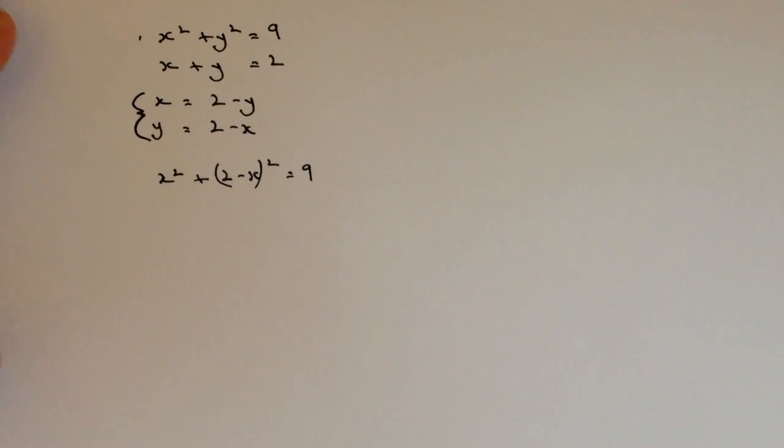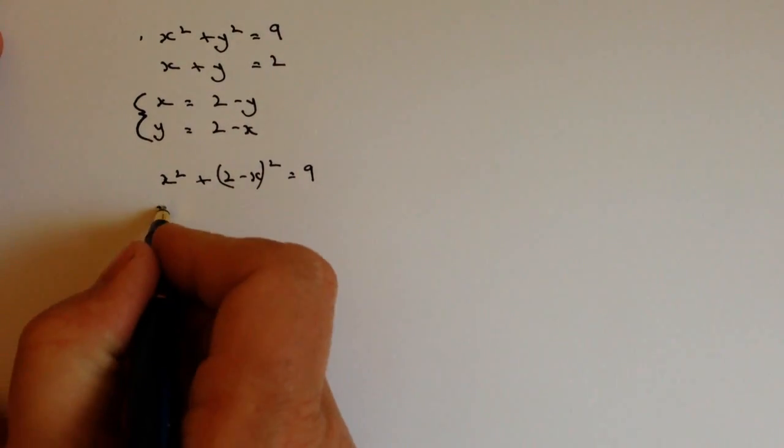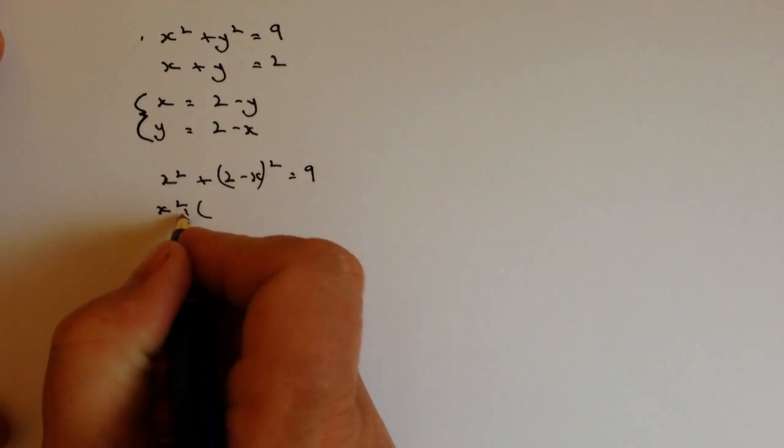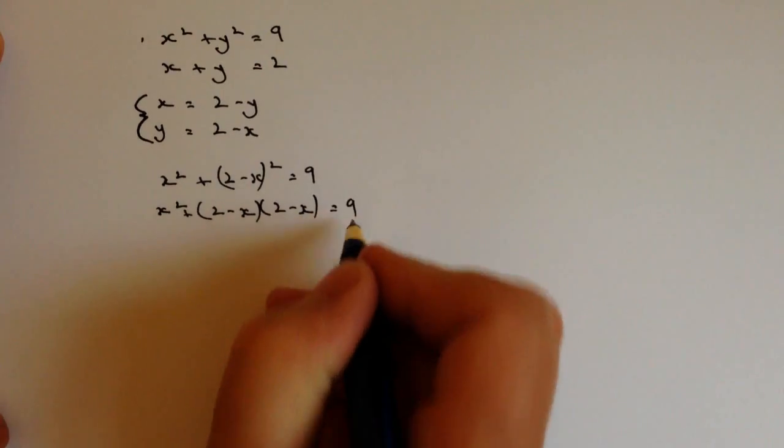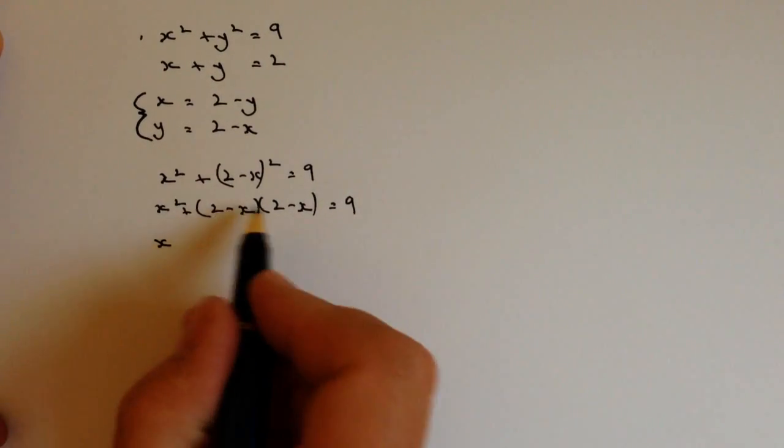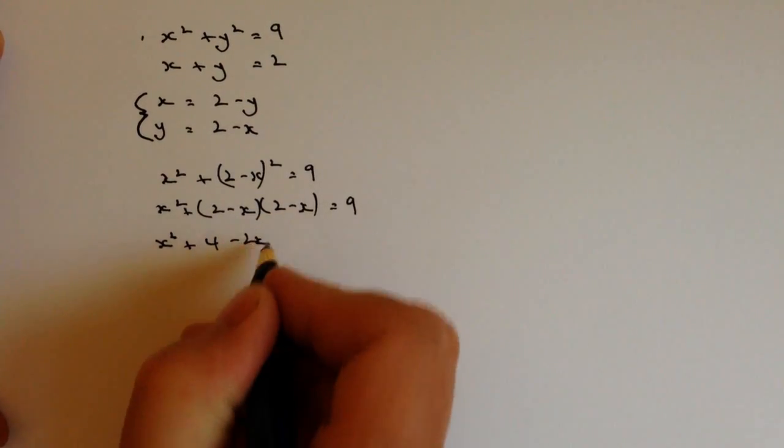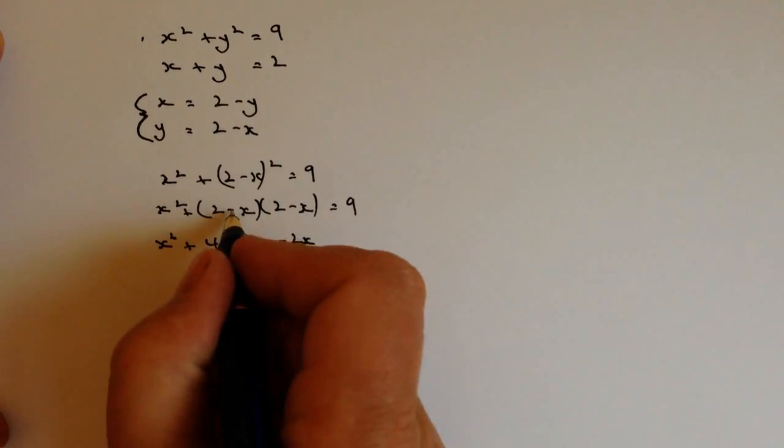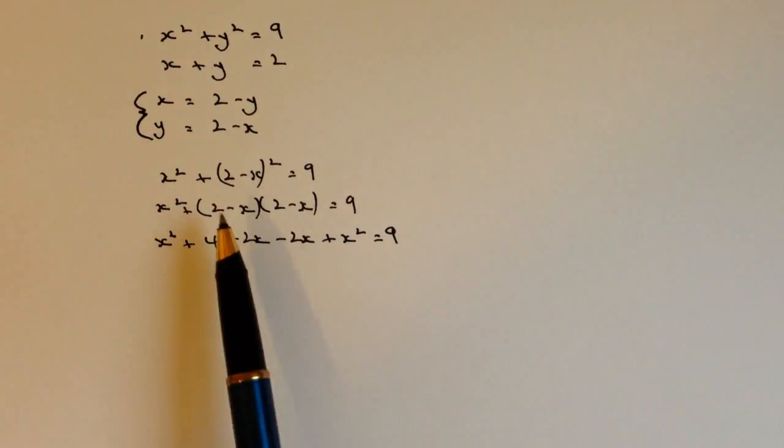So what we need to do then is just start to work this through. So the first thing is, I'm going to multiply out these brackets. So I've got x squared and then I've got 2 minus y squared. Well that's exactly the same as saying 2 minus x squared is 2 minus x times 2 minus x, and that equals 9. Now let's just look at multiplying these brackets. So I've got x squared plus, and I've got 2 times 2 is 4. 2 times minus x is minus 2x. Minus x times 2 is minus 2x. And then minus times and minuses are plus x squared. And that all equals 9. I hope that's been okay for you because this way of multiplying out the brackets might be slightly different for certain people in the way that you might have been taught.